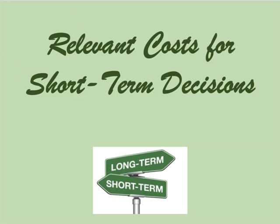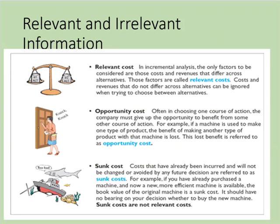We're going to do a brief introduction into relevant costs that are used for short-term business decisions. We're going to see how managers use their knowledge of cost behavior to make special business decisions, like whether or not to outsource operating activities. The decisions we'll focus on in this chapter only pertain to short periods of time, so managers don't need to worry about something called time value of money — we'll cover that later.